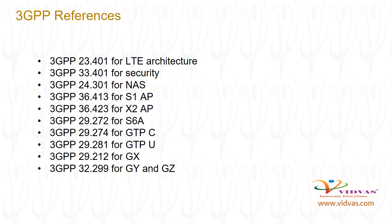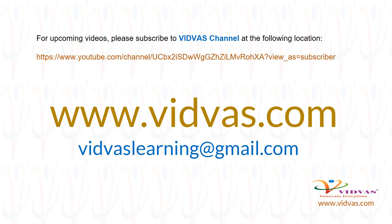The following is the list of 3GPP references: 3GPP 23.401 for LTE architecture, 3GPP 33.401 for security, 3GPP 24.301 for NAS, 3GPP 36.413 for S1AP, 3GPP 36.423 for X2AP, 3GPP 29.272 for S6A, 3GPP 29.274 for GTP-C, 3GPP 29.281 for GTP-U, 3GPP 29.212 for Gx, and 3GPP 32.299 for Gz. For upcoming videos please subscribe to VidViz Learning channel.